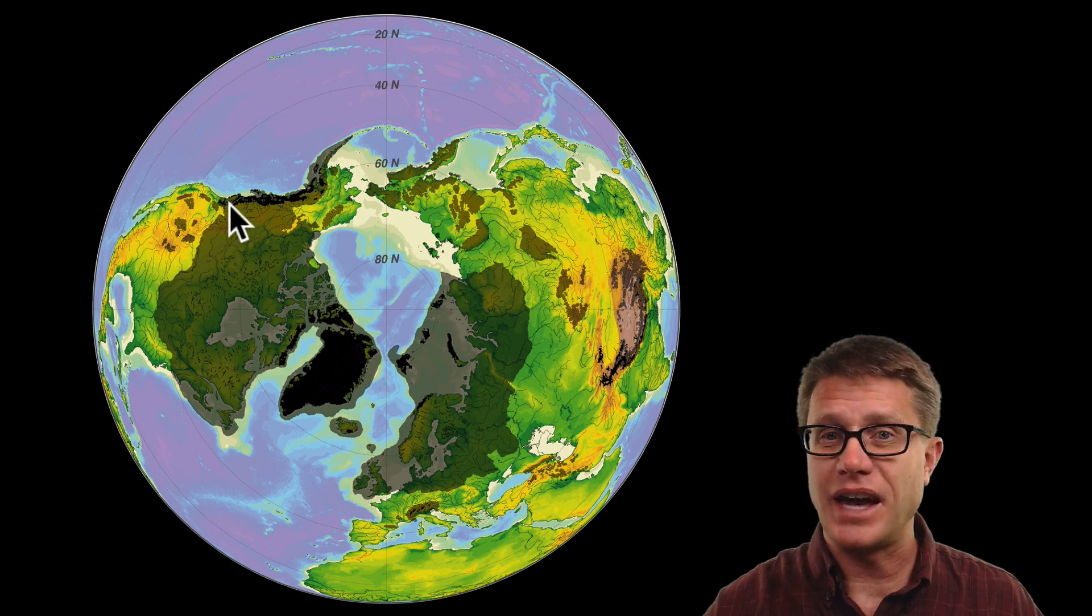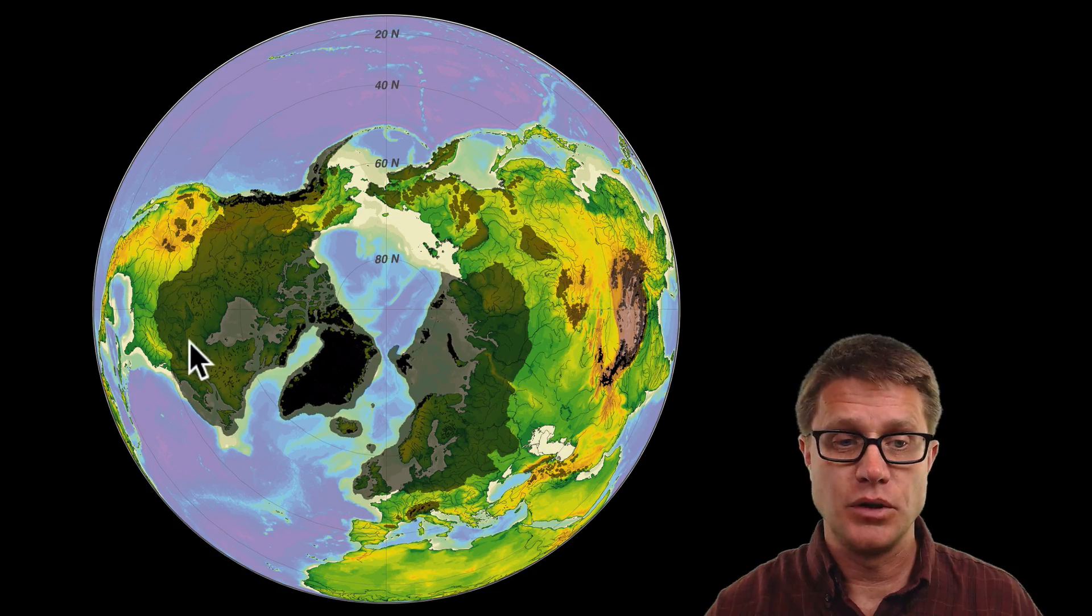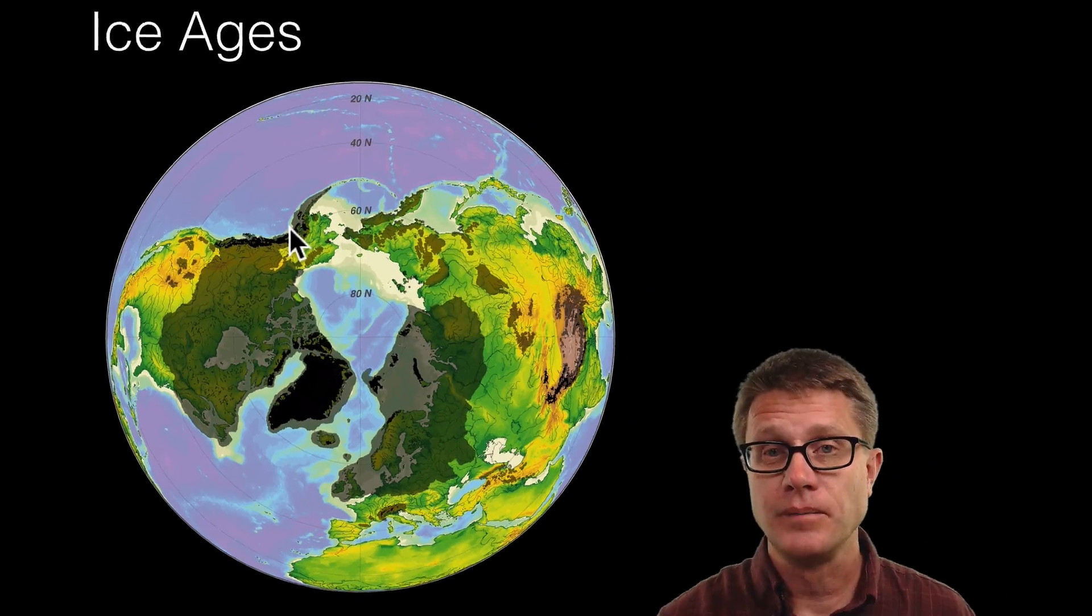That means most of Canada, Great Britain, all of Scandinavia would be covered. It would move down into the US as well. Massive ice sheets. And then we would have times where there is not much ice at all. Just this dark area where Greenland is and then along the coast right here.